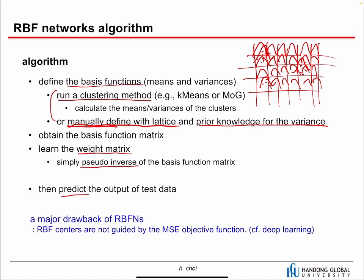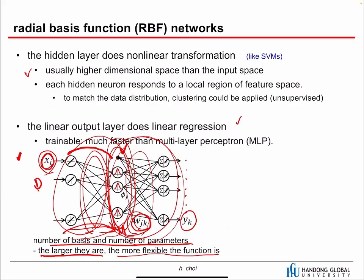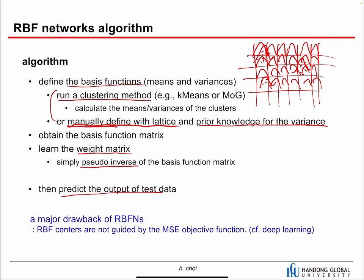We can then predict the output for test data. There is a major drawback of RBF networks: the RBF centers are not guided by the MSE objective function. The basis functions are defined regardless of the objective function. In deep learning, all layers are organized to optimize a single objective, but in RBF networks the basis functions have nothing to do with the objective — even when using clustering, the clustering method is unrelated to the objective. That is one big problem.